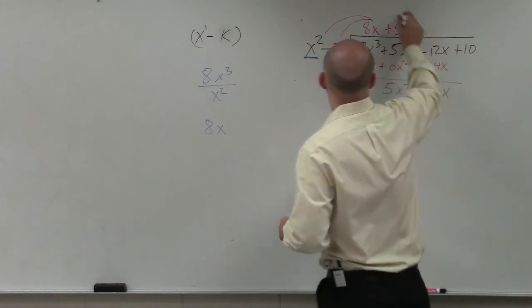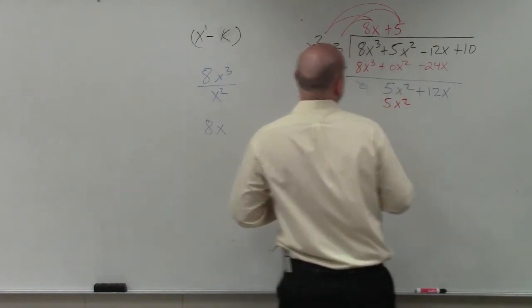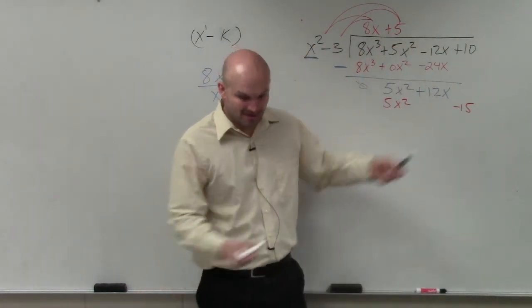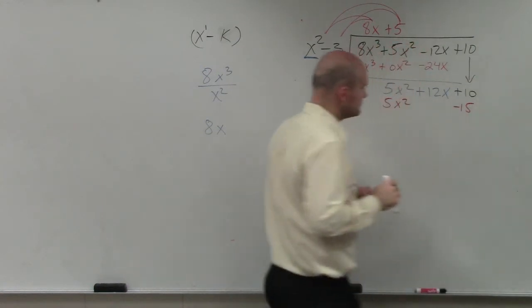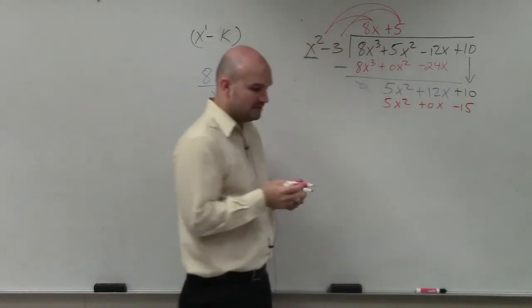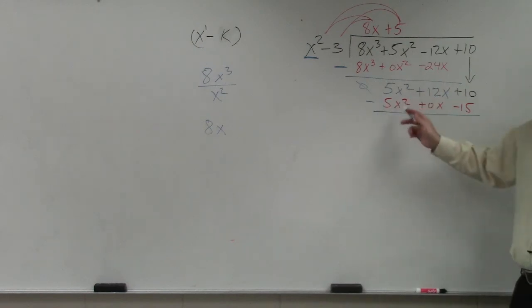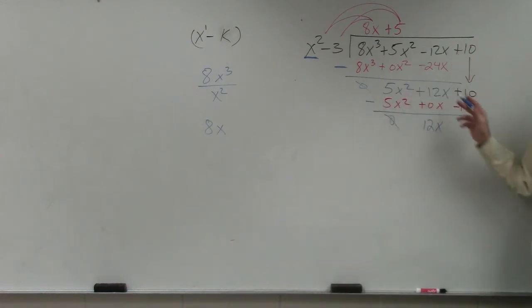So x² divides into 5x² five times. Then I do just like I did before. I have to multiply this times both terms. 5 times x² is going to be 5x². 5 times negative 3 is going to be negative 15. See now, I need that 10, so I will bring it down. And then to give me a place value for this, I'll use plus 0x. Then again, I go back and I subtract. 5x² minus 5x² is 0. 12x minus 0x is going to be 12x. 10 minus a negative 15 is like plus 15, which would be a plus 25.